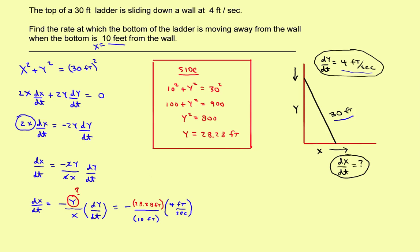Now I know everything I need to solve the problem. The feet cancel out — feet here and feet here cancel. Sticking this on a calculator gives −11.3 feet per second. That's the rate at which the bottom of the ladder is moving away from the wall. As for the sign, it just depends on how you set up the problem; you could call dy/dt negative 4 feet per second. Either way, the bottom is moving away at 11.3 feet per second, which is dx/dt.